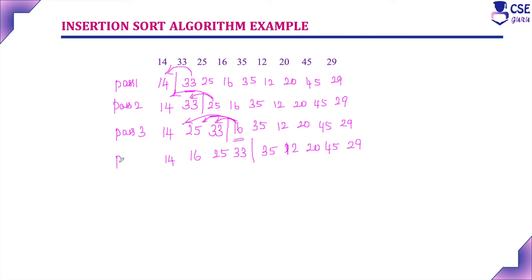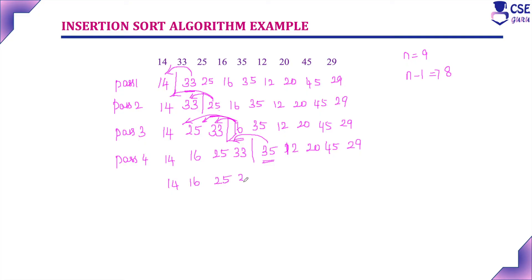Now implement pass 4. Here, n equals 9 elements, so after n minus 1 passes — that is after the 8th pass — all elements will be in the sorted list. In pass 4, element 35 is compared with all elements in the sorted list. 14 occupies first, then 16, then 25, then 33, and 35 is the largest element so it occupies the last location. The unsorted list now contains 12, 20, 45, and 29.